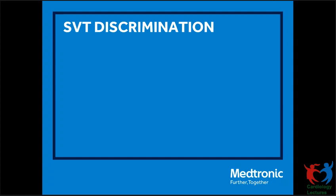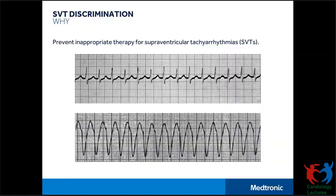For example, if I consider a sinus tachycardia, if the sinus tachycardia rate increases and goes into the VT zone, the device will detect a sinus tachycardia as a VT and then deliver a therapy. SVT discrimination helps in discriminating a detected rhythm and withholding therapies for those of supraventricular origin. We will be discussing the SVT discriminators available in our devices and the key concepts on how they work.